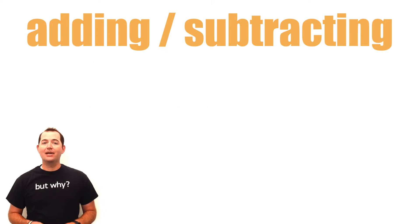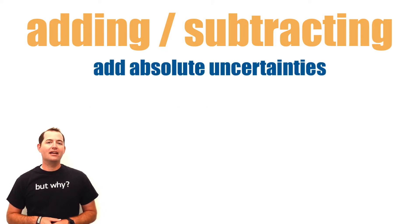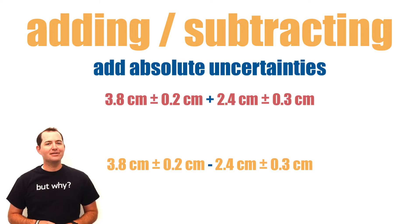When adding or subtracting, we add or combine the uncertainties of each quantity. Remember that absolute uncertainties are presented in the same units as our original measurement or value.